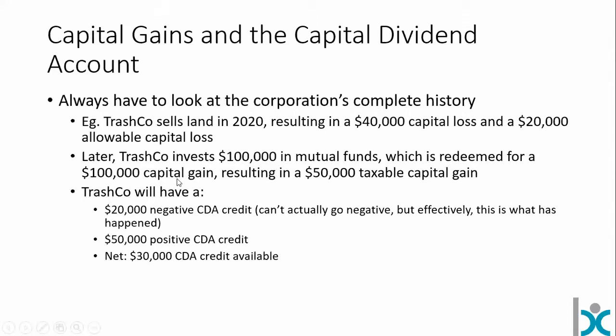When we get that capital gain in TrashCo, the accountant Norman looks at the history of capital gains and losses and says: we had a $20,000 negative CDA credit from the capital loss, and a $50,000 positive CDA credit from the capital gain. The net is a $30,000 CDA credit available — meaning there's up to $30,000 available for TrashCo to pay out as a tax-free capital dividend. It doesn't mean the company has the cash, but it has the opportunity assuming it can make that happen.